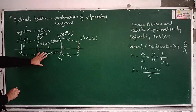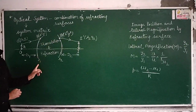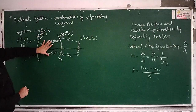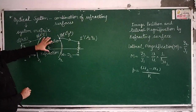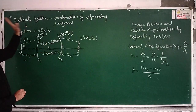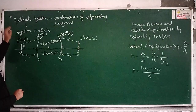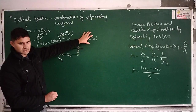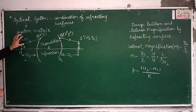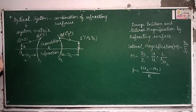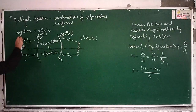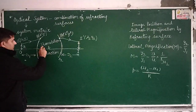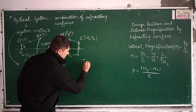Between surfaces S1 and S2, a combination of refracting surfaces performs a series of translations and refractions. This combination is represented by a system matrix. The system matrix is a matrix that connects the optical coordinates of the image in image space with the optical coordinates of the object in object space.